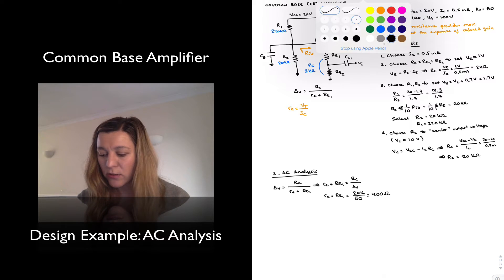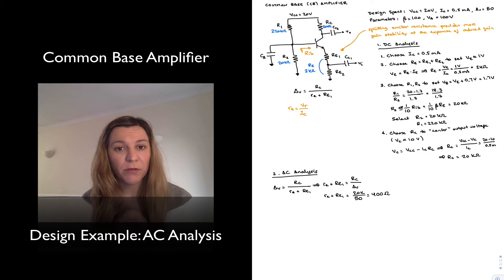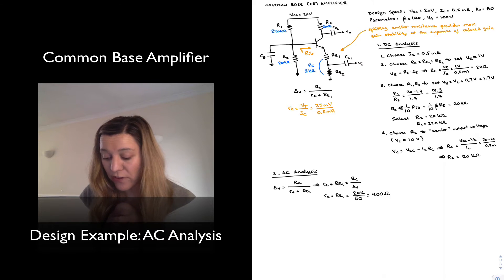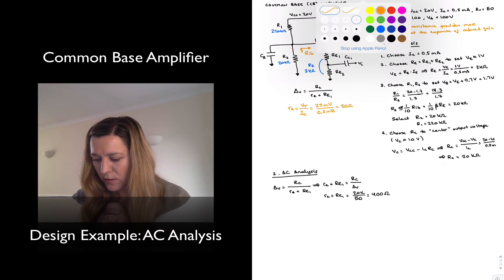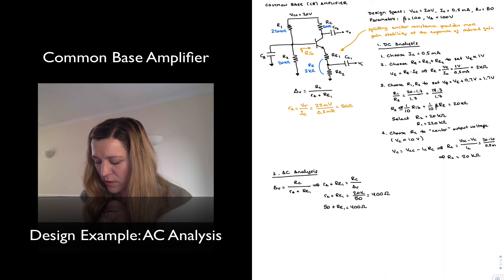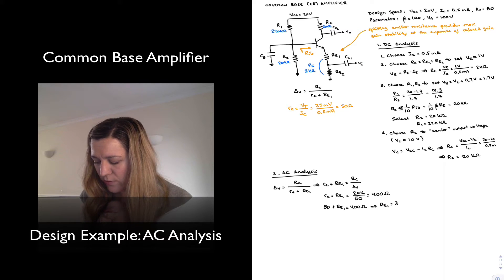Little re is equal to the thermal voltage divided by the quiescent collector current. Assuming room temperature, we approximate the thermal voltage as 25 millivolts and the quiescent collector current as 0.5 milliamps, which gives 50 ohms. So 50 plus RE1 must equal 400 ohms, and therefore RE1 is equal to 350 ohms.